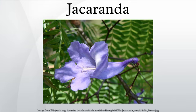Jacaranda is a genus of 49 species of flowering plants in the family Bignoniaceae, native to tropical and subtropical regions of Central America, South America, Cuba, Hispaniola, Jamaica, and the Bahamas. It has been planted widely in Asia, especially in Nepal. It is also quite common in South Africa, Zimbabwe, and Australia. It has been introduced to most tropical and subtropical regions. The genus name is also used as the common name.